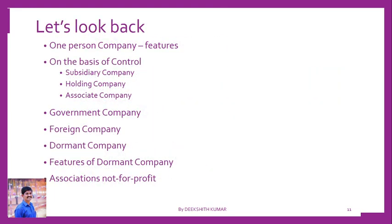Let us look back at what we have seen in this video. We have studied about one-person company and its features, classification on the basis of control — subsidiary company, holding company, associate company — government company, foreign company, dormant company, and association not-for-profit under Section 8.